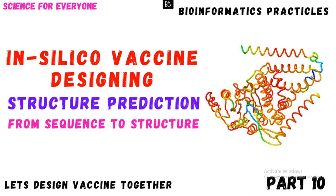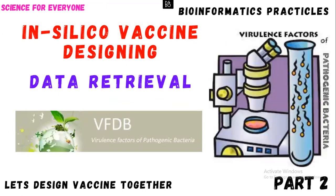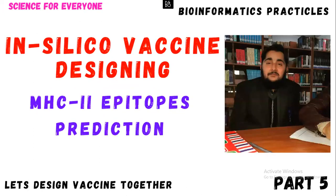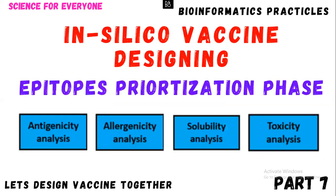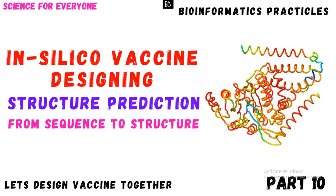Let me give you a quick recap. I started the video series from the very beginning, giving an introduction about the entire course and methodology. After that, we covered data retrieval and data mining, then homology checks, B-cell epitope prediction, MHC2 and MHC1 epitope prediction, epitope prioritization, the final vaccine construct, and in the last video I discussed immune simulation.